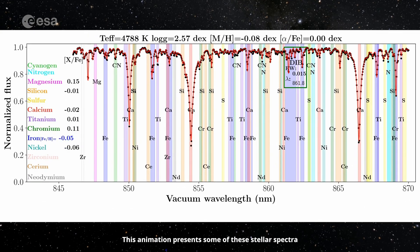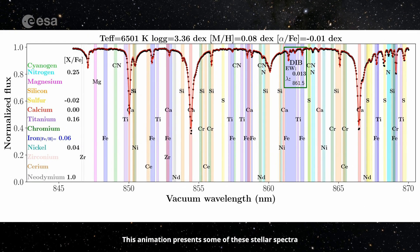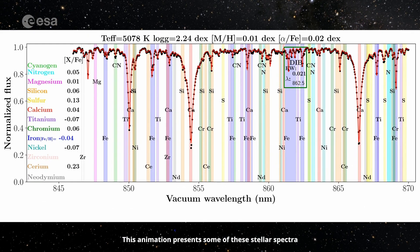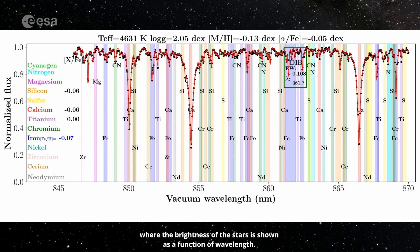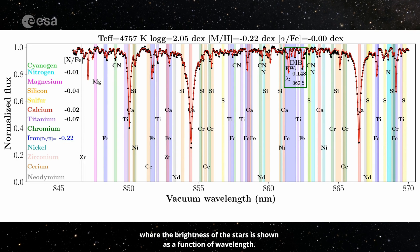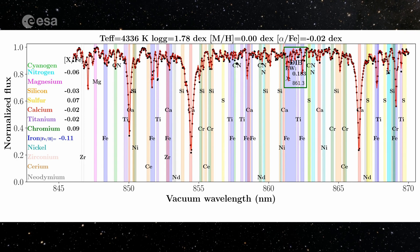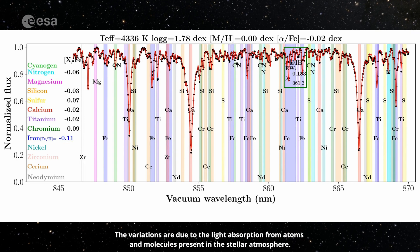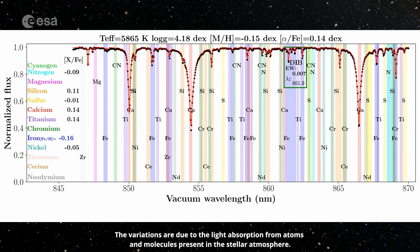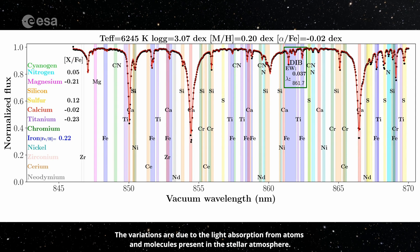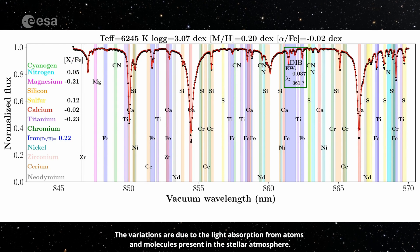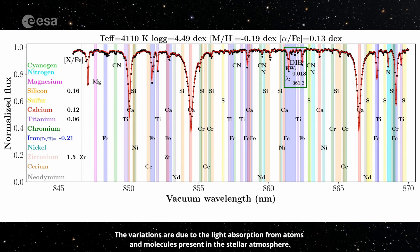This animation presents some of these stellar spectra where the brightness of the stars is shown as a function of wavelength. The variations are due to the light absorption from atoms and molecules present in the stellar atmosphere.